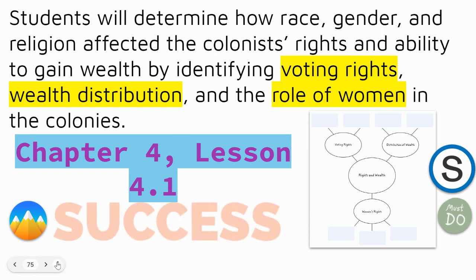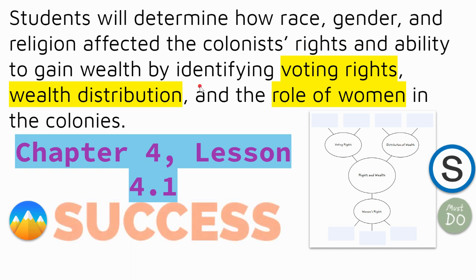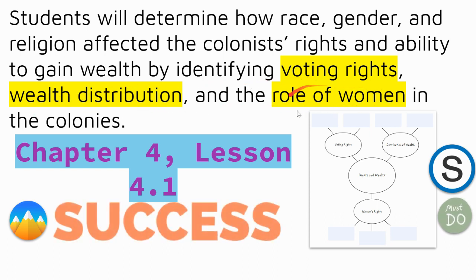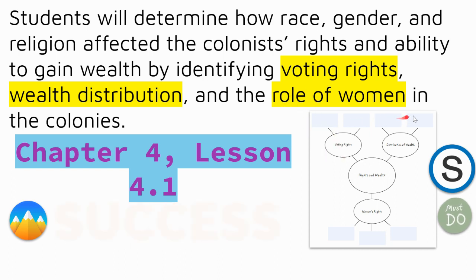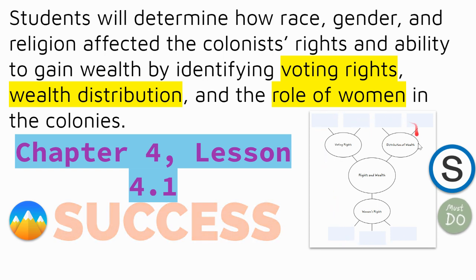Here's our success criteria. In class, we did a critical read on men and women in the colonies. We looked specifically at voting rights, how wealth was distributed, and the role of women in the colonies. You were supposed to take that information, notes, reading, and highlights to help you fill in your thinking map.